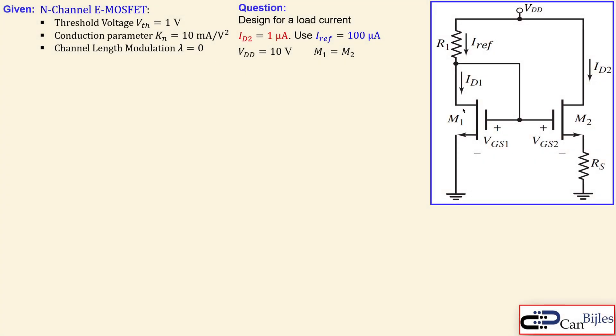We have the following circuit. As said before, this is similar to the BJT variation of the Widlar current source. We have two MOSFETs, enhancement N-channel MOSFETs.